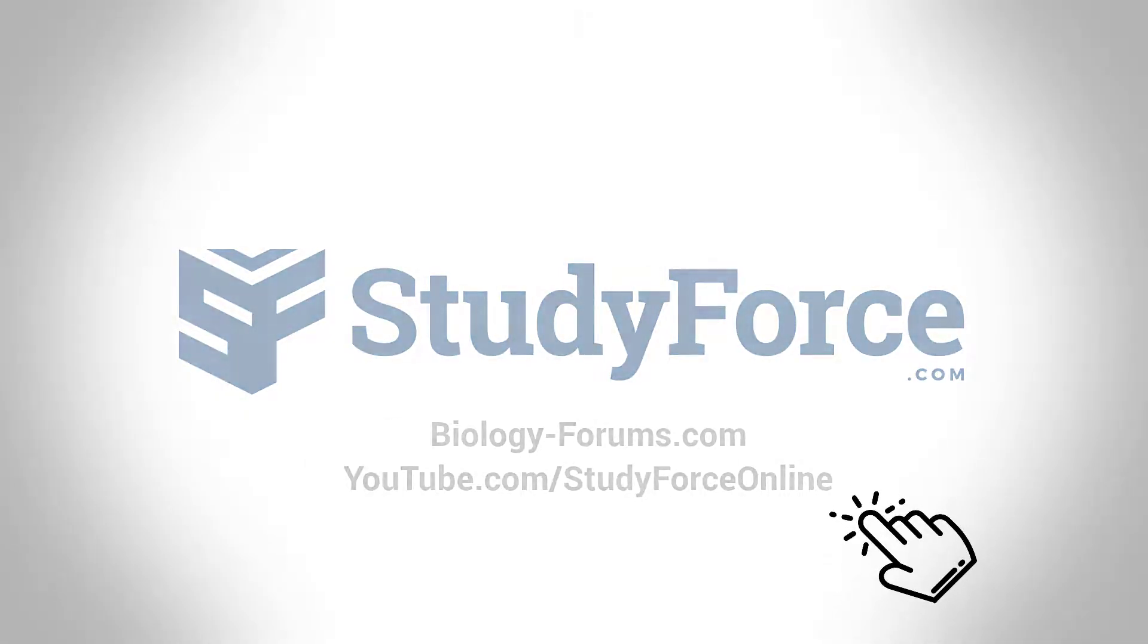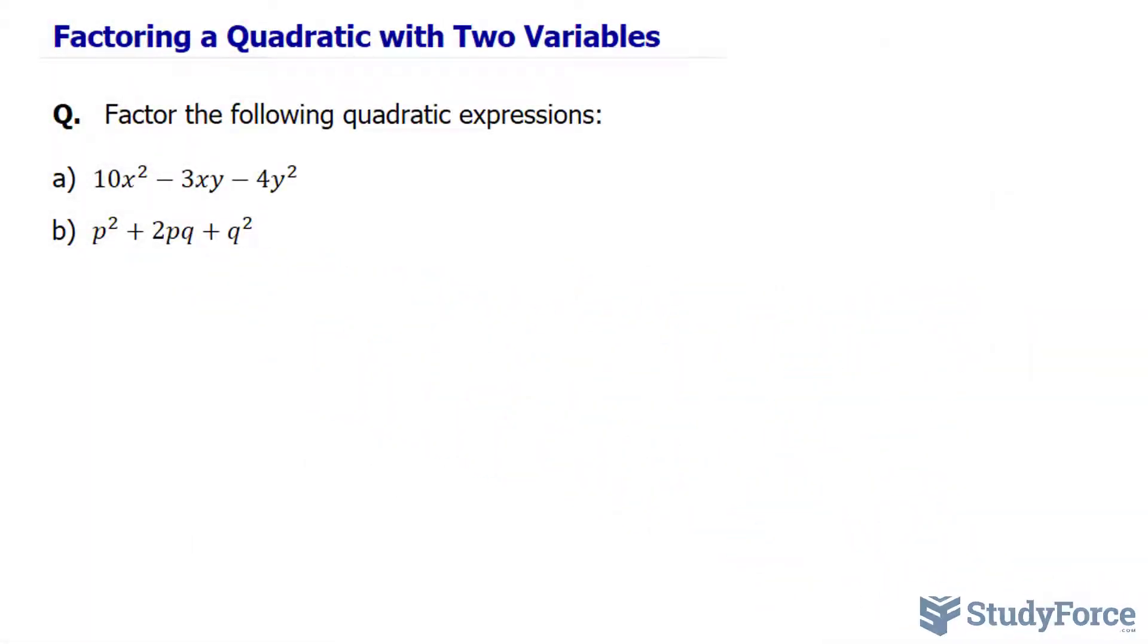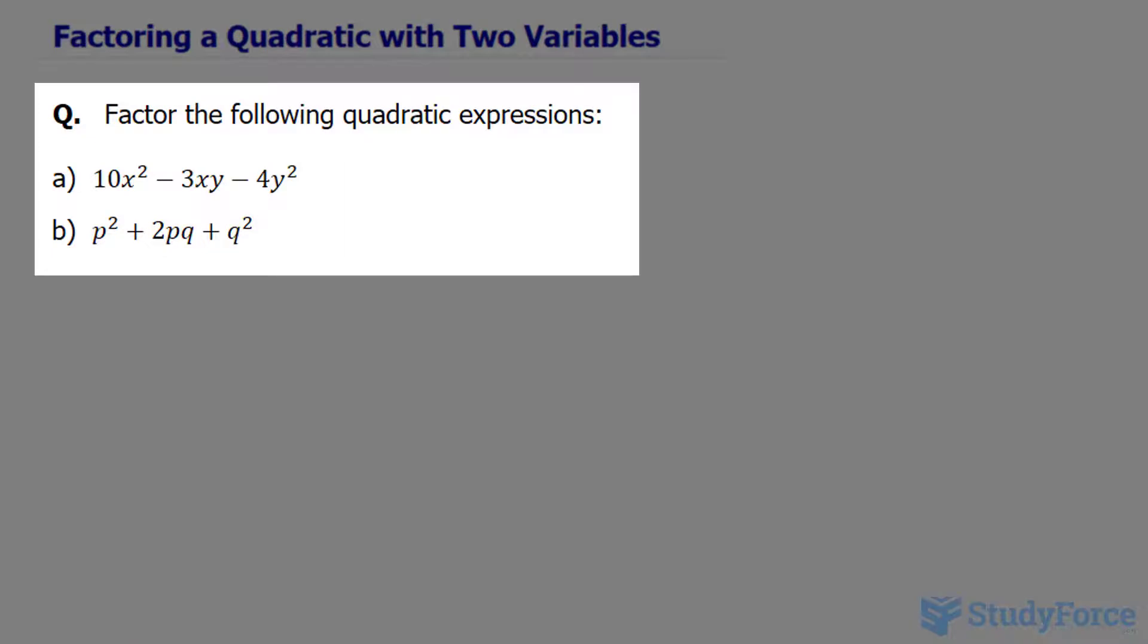In this quick tutorial, I'll show you how to factor a quadratic with two variables. We have two questions here and we'll start with A. We have to factor 10x² - 3xy - 4y².